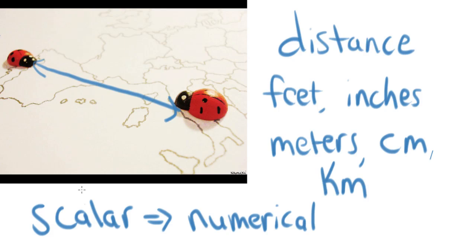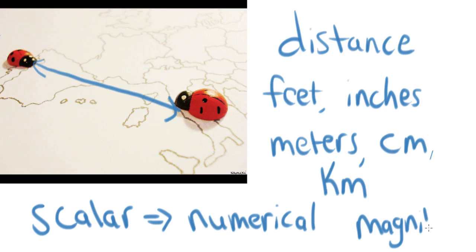Distance is what we call a scalar quantity, and a scalar quantity simply means a numerical value is given — how many meters, how many feet, how many centimeters. We also refer to scalar quantities as having only magnitude. Magnitude only, numerical value only, no direction.